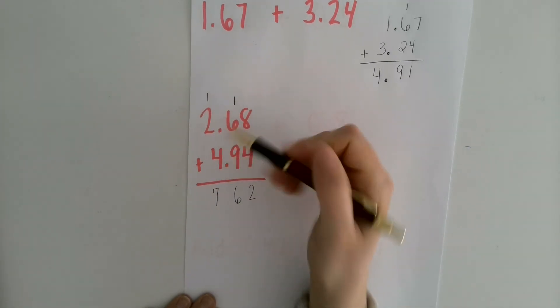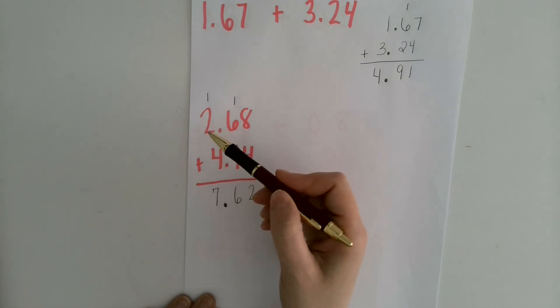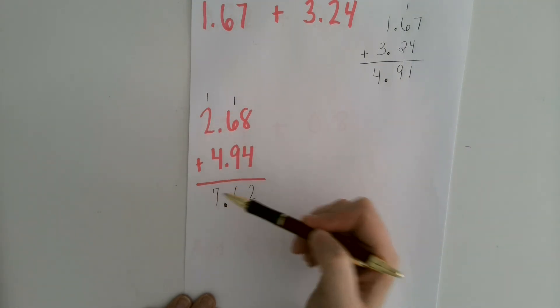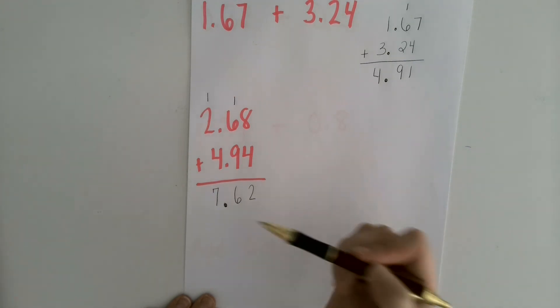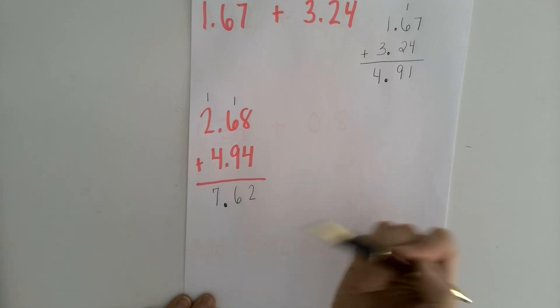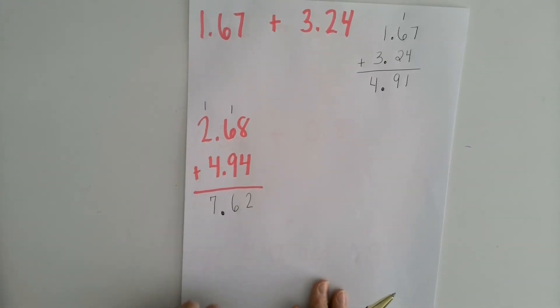And then just like before, I want to make sure I bring that decimal point right down. So it's going to come right down between my 7 and 6 in my answer. One way to check if you brought the decimal into the right place is to just think logically to yourself. I'm adding 2 and something and 4 and something. So it makes sense that I would get 7 and some extra. If I had brought the decimal over here, for example, and had an answer of 76, I would logically know that that didn't make sense. So you can always check your work that way.